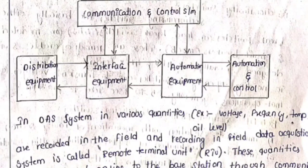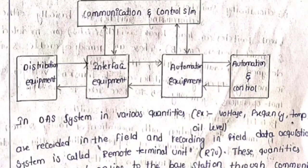Simply, a communication and control system is required for any distribution automation system through distribution equipment. After distribution equipment, we use interfacing equipment like sensors and Arduino. Between the interfacing equipment and the communication control system, there is a communication link. Finally, automatic switching relays are used in the automation equipment. From the distribution equipment, we sense the fault using sensors, which are then interfaced to the communication and control system.